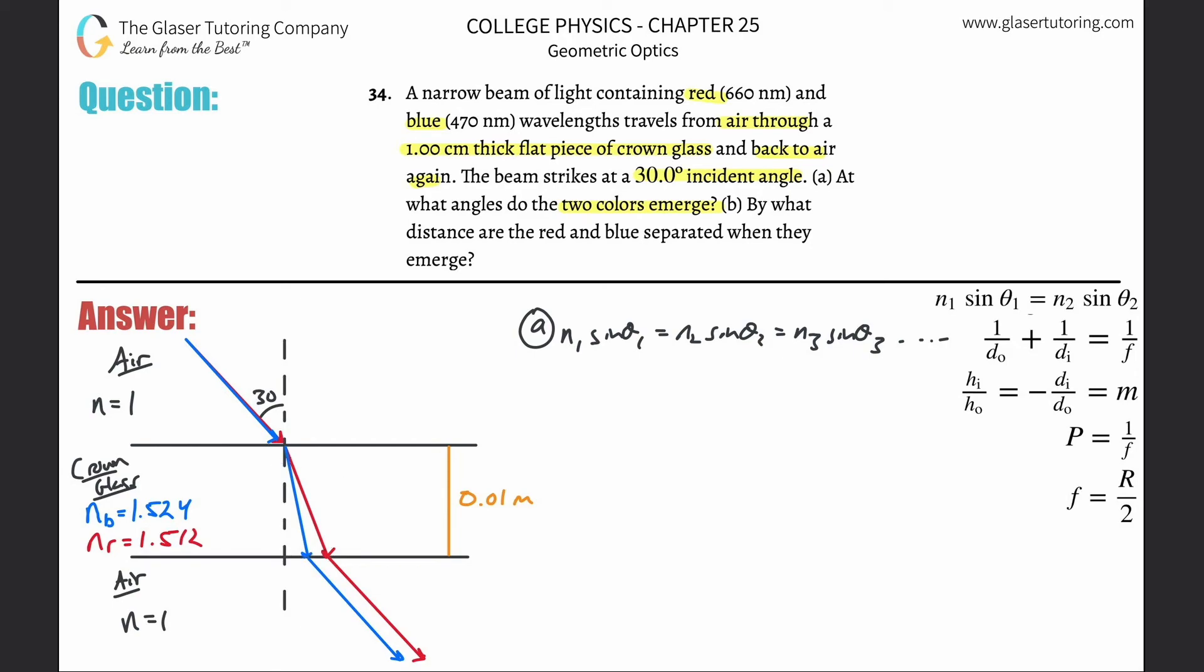Basically, the incident ray here is converted to a refracted ray in the crown glass. Then this refracted ray becomes the new incident ray on this boundary, and then these are the new refracted rays. So we're using information from the air to calculate crown glass, then crown glass to calculate back to air. This is the information for air, this is the information for crown glass, and this is the information for air.